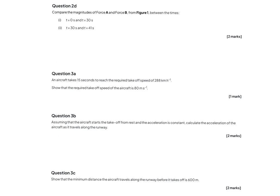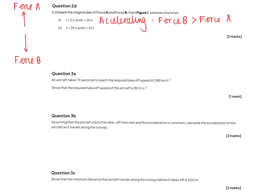Question 2d: compare the magnitudes of force A and force B from figure 1. For part i, during the first 30 seconds the skydiver was accelerating, which means force B (downwards) must be bigger than force A. An overall net force is required to cause acceleration. For part ii, between 30 and 41 seconds there was constant velocity, so the forces must be balanced — from F equals ma, there is no overall acceleration, so force A equals force B.